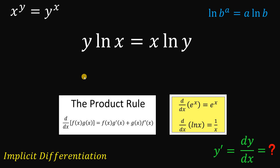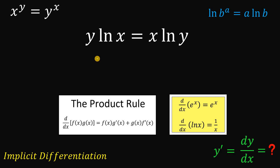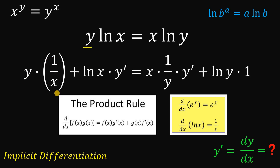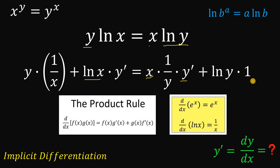Now let's begin. Using the product rule, let's get the first function times the derivative of the second. So, y times 1 over x, plus the second function times the derivative of the first, which is y prime. Then, equivalent to the right-hand side: get the first function times the derivative of the second — the derivative of ln of y is 1 over y. Using the chain rule, we multiply by the derivative of y, which is y prime. Plus, get the second function times the derivative of the first, which is just 1.